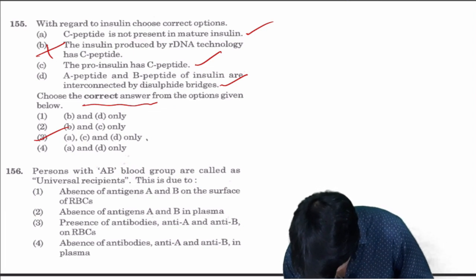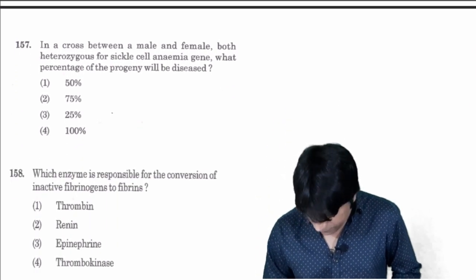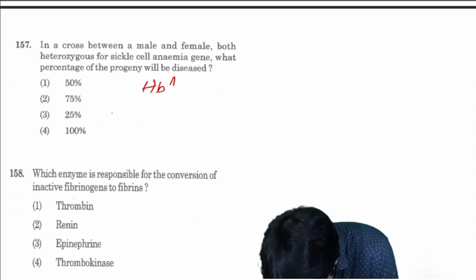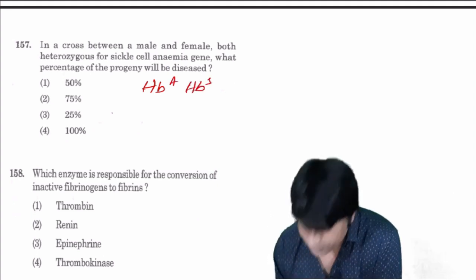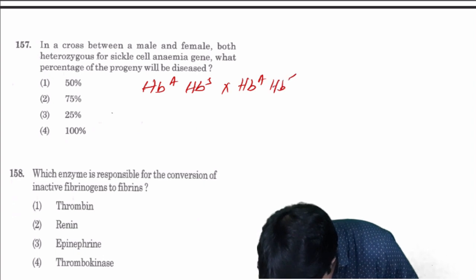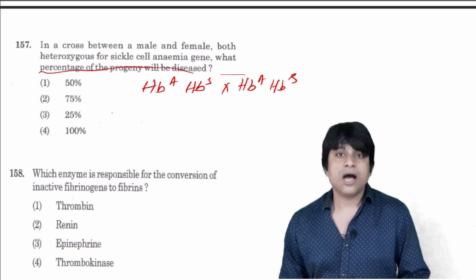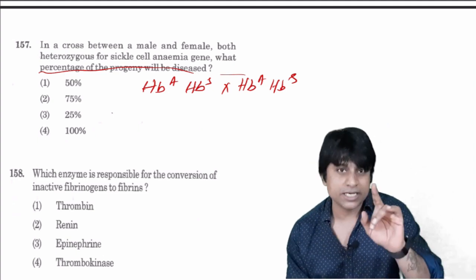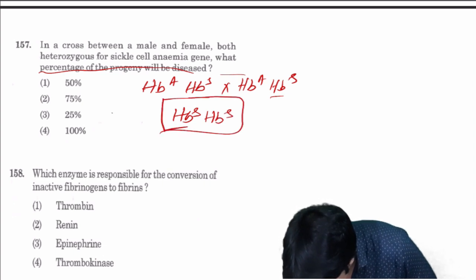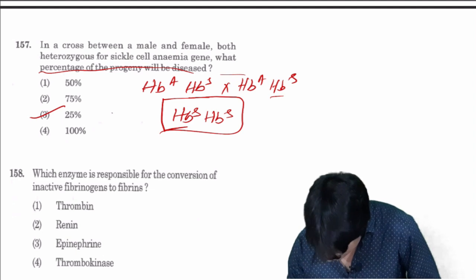A cross between a male and female both heterozygous for sickle cell anemia. If I take a trait like hemoglobin A and hemoglobin S, the percentage of progeny that will be diseased - in heterozygous condition you can expect there is only one with this type of genotype, so out of four this is one, that is 25 percent is the correct answer.